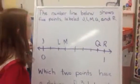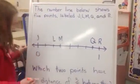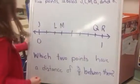The number line below shows five points, labeled J, L, M, Q, and R. Which two points have a distance of three eighths between them?